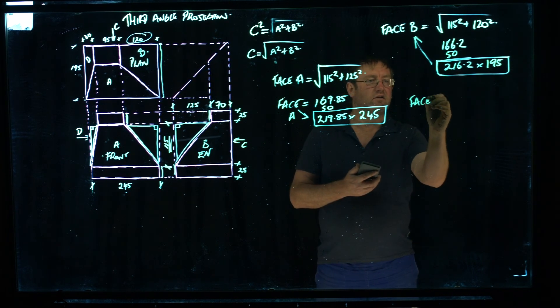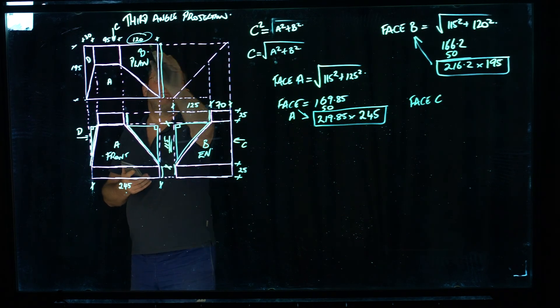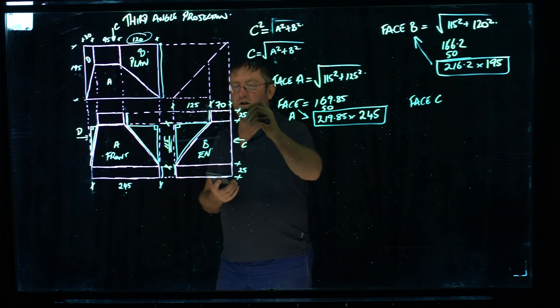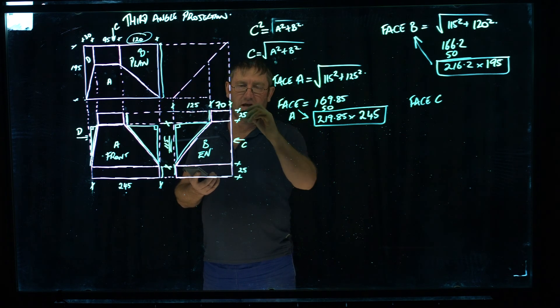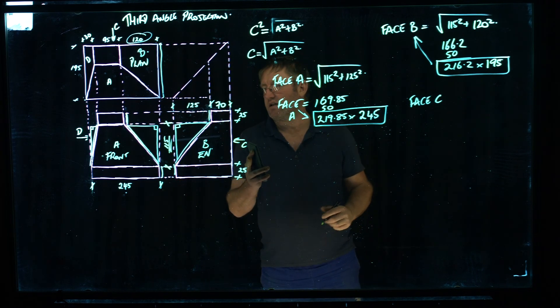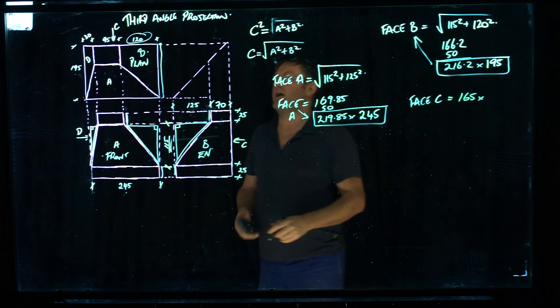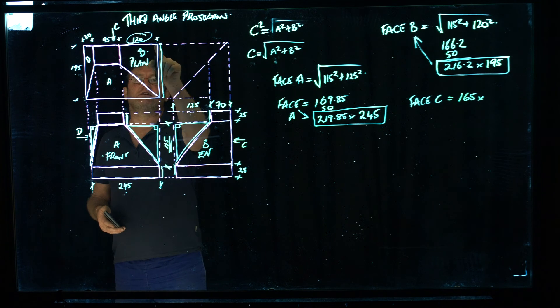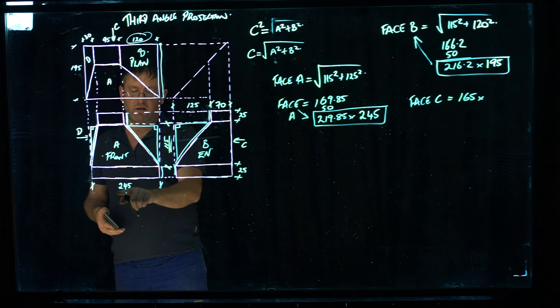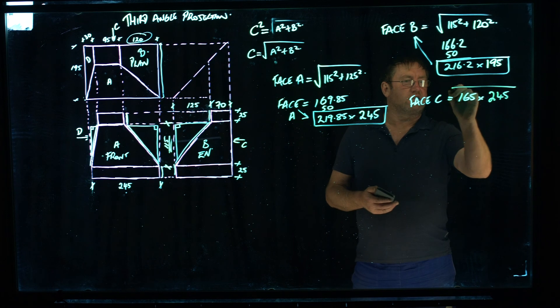Face C. Well, face C is actually this line across the top here, projected to the outside. It's a straight line. It had a straight back on the transition. So we don't have to use Pythagoras' theorem for that. It's just 25 plus 115 plus 25. So what's that come out at? That's 165 equals 165. And face C in plan is actually this distance right across the top here. It's this flat line. And if we come down to the bottom, it's 245mm. So that's the cut size for face C.